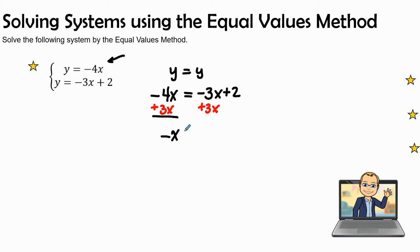We subtract or combine like terms: negative 4x plus 3x is negative x. We're keeping our equal signs in line with each other. Negative 3x plus 3x cancels each other out, and we're going to bring down the remaining part of the equation, which is 2.